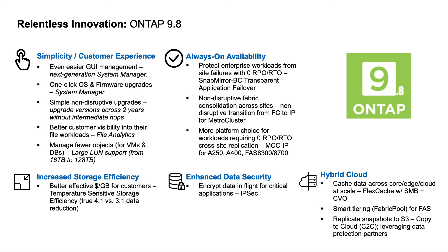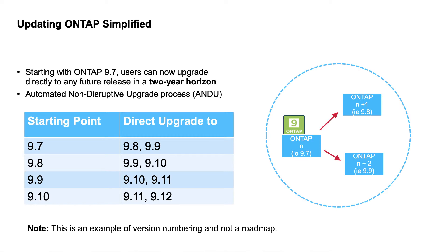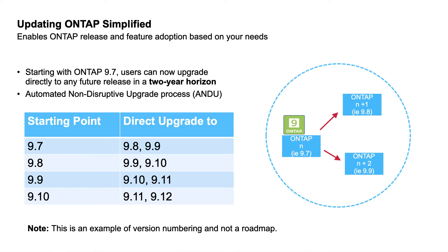Staying current with ONTAP is now even easier. One of the ways we've made it easier is we've added the ability to upgrade directly to a new version by up to two generations. Basically, if you're on ONTAP 9.7, you'll be able to upgrade directly to ONTAP 9.8 or 9.9 via our automated, non-disruptive upgrade process.